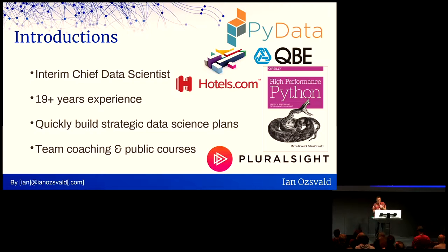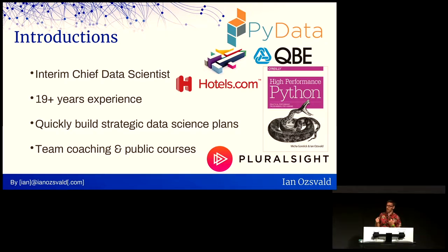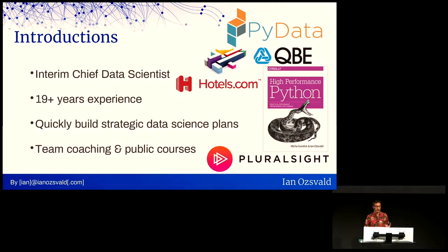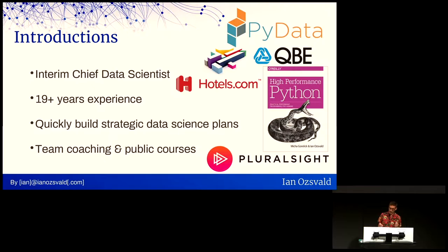My name is Ian Oswald. I style myself as an interim chief data scientist. I'm a practicing data scientist — I write tools and intellectual property for clients. Increasingly over the last few years, I've stepped in to help teams in companies that lack senior leadership on the data science side, trying to shape the team, figure out what they're doing, what is working, what is not working, and how to make a project work successfully. I've been doing this for nearly 20 years.